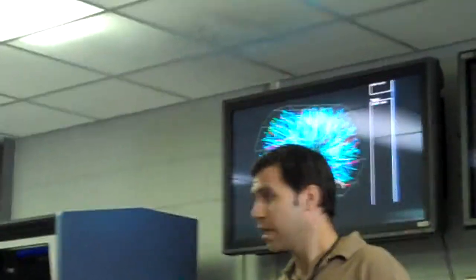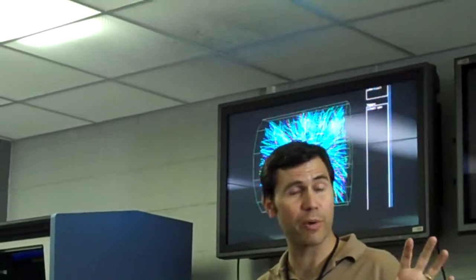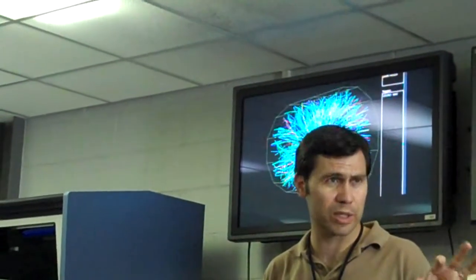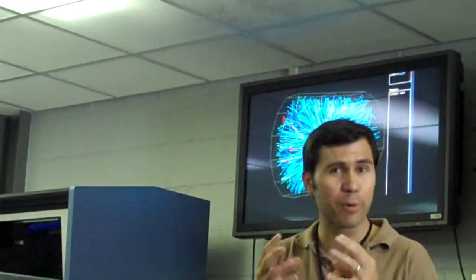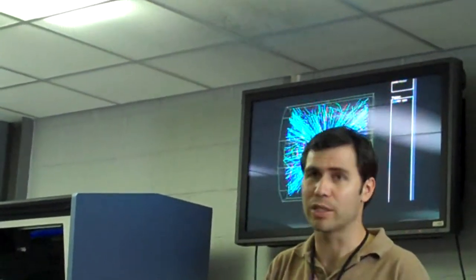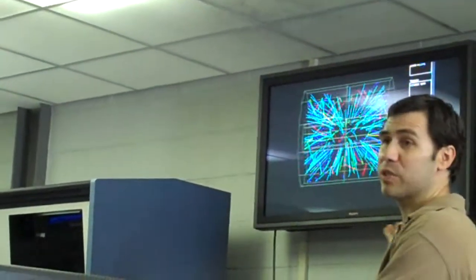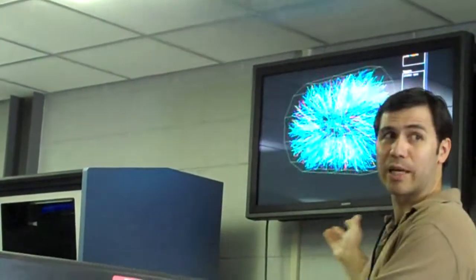We started out with two gold nuclei, essentially 200 protons and neutrons in one gold nucleus - 197. So two gold nuclei come together, they bring about 400 protons and neutrons in. How do we go from 400 protons and neutrons to four to five thousand particles? Anybody got a good guess?